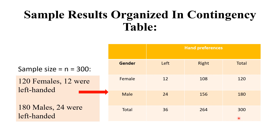Here we know that n equals 300, which is the sample size. The total number of females is 120 out of 300, and the total number of males is 180. Of the 120 females, 12 are left-handed, and of the 180 males, 24 are left-handed.